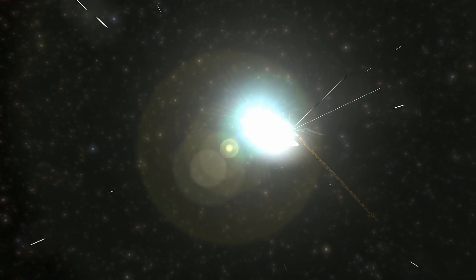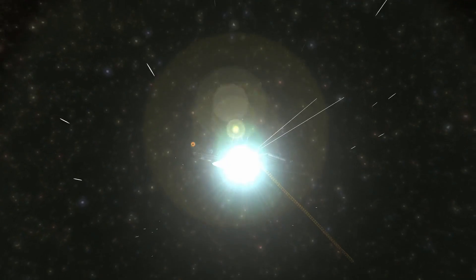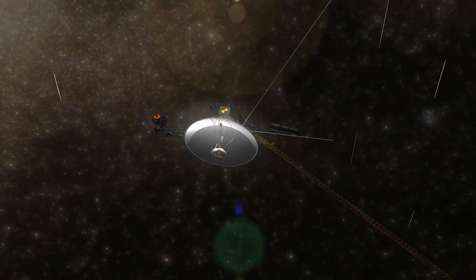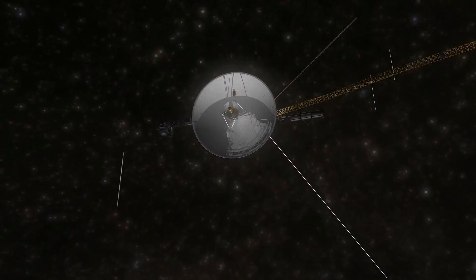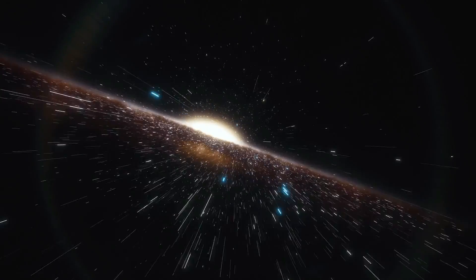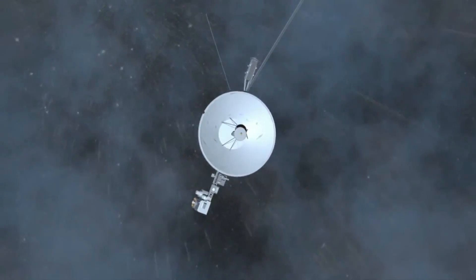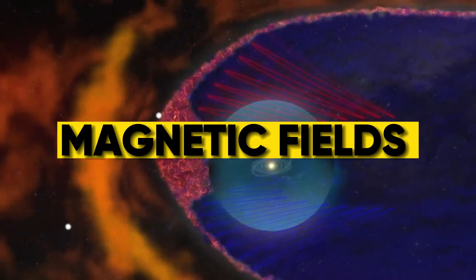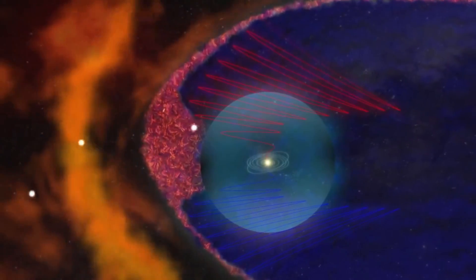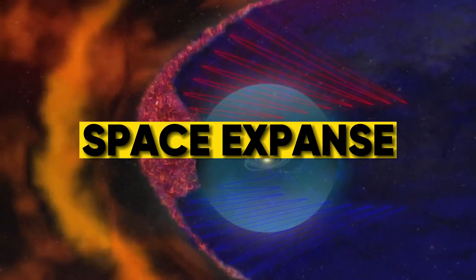These spacecrafts have traveled farther than any other human-made object and have even left our solar system, venturing into the depths of interstellar space. But their journey hasn't been without its challenges. The Voyager spacecrafts encountered radiation, magnetic fields, and debris as they traveled through the vast space expanse.